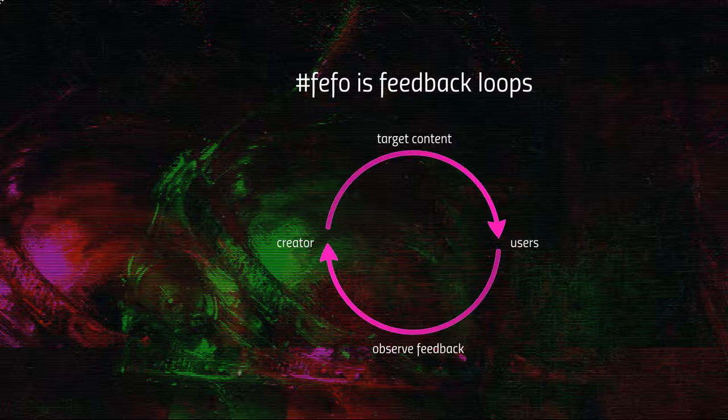Finally, FIFO is always a feedback loop. As the creator, you create content targeting a specific audience. All your content should be aimed at engaging with users and increasing that engagement. Your content reaches users, you observe how they engage with it — and if they're not engaging at all, that is also feedback, meaning you need to change things. You then integrate that feedback into your production process and start again. FIFO is a feedback loop.